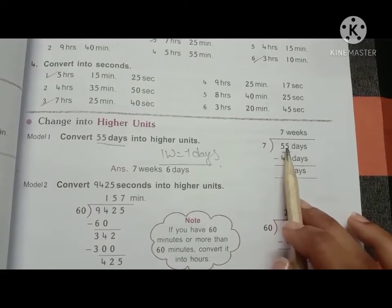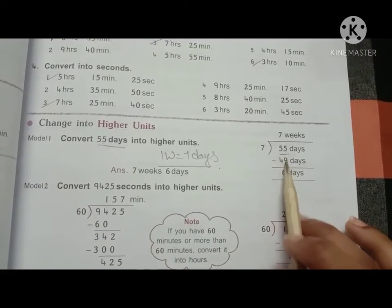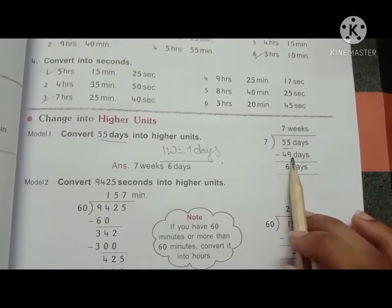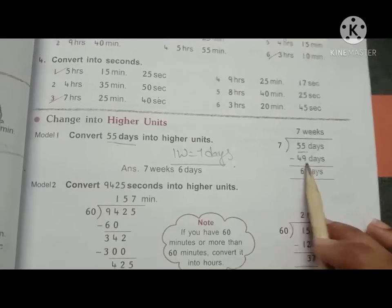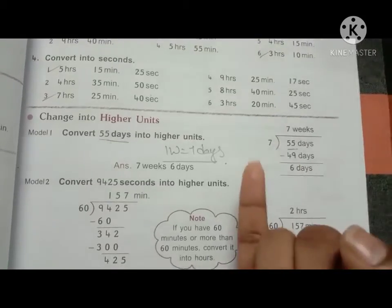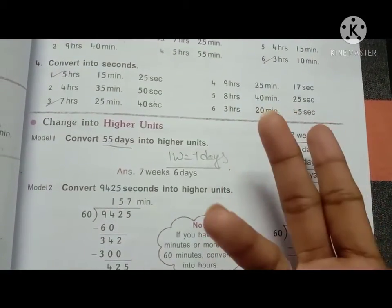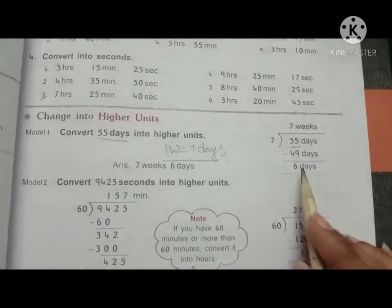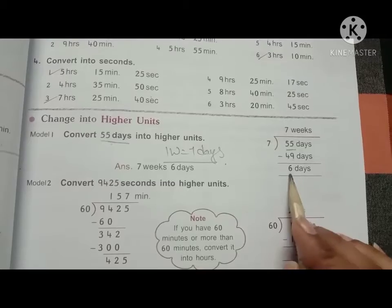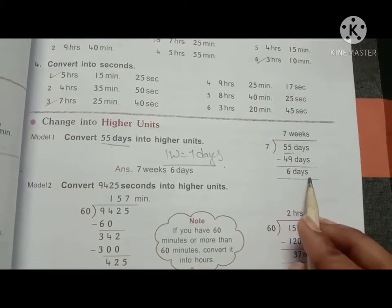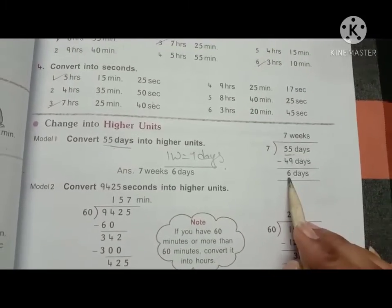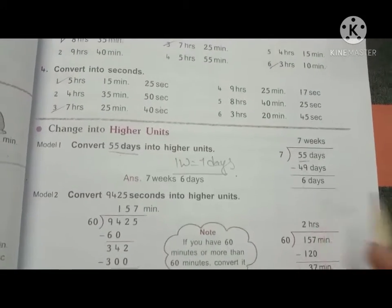We do subtraction: 55 minus 49. Counting after 49: 50, 51, 52, 53, 54, 55 — 6 days are left. So 6 days are left as the remainder.